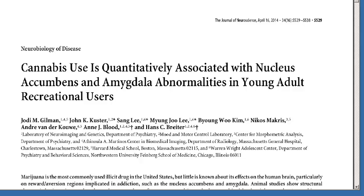Most scientific journal articles follow the same logical scheme. They begin with a section that looks at the background to the study and an explanation of why the authors chose to do the research. Then comes an explanation of how the researchers carried out the experiment, followed by their findings and their conclusions.